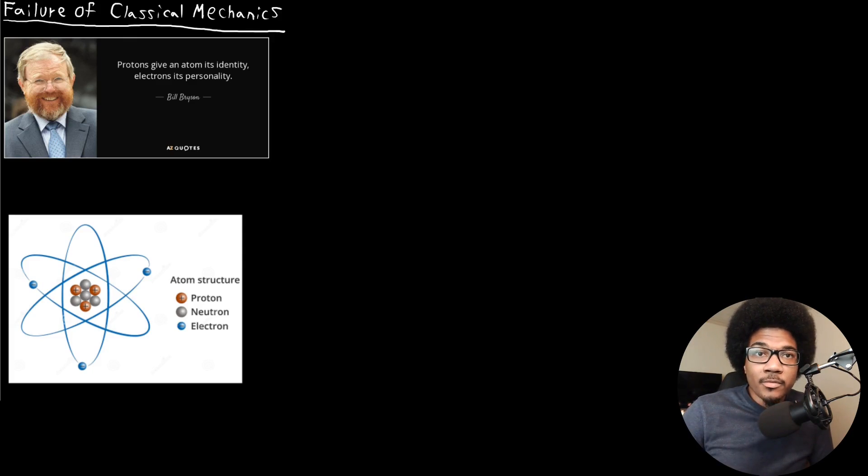Earlier in the course, we talked about some of the early experiments to elucidate the subatomic particles that exist in atoms: the protons, neutrons, and electrons. In this unit, we're really going to focus primarily on the electrons. And the reason why, I love this quote by Bill Bryson, who's an author who wrote a really good popular science book called A Short History of Nearly Everything. And what he said is protons give an atom its identity, electrons its personality.